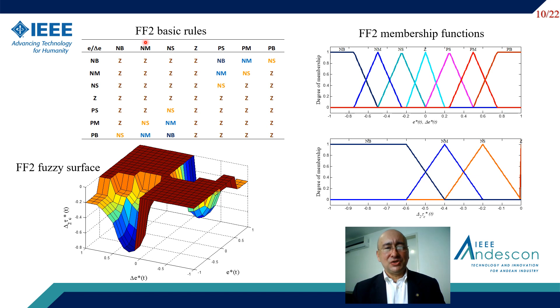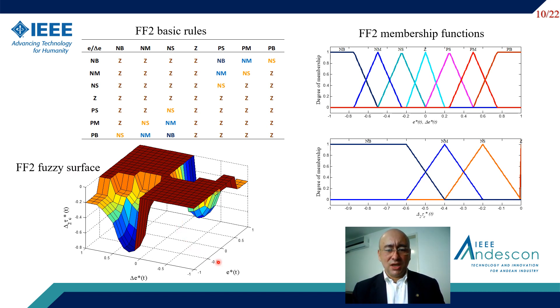This slide shows the FF2 basic rules, membership functions, and the fossil surface generated to decrease the closed-loop time constant when the error and its change have different signs.